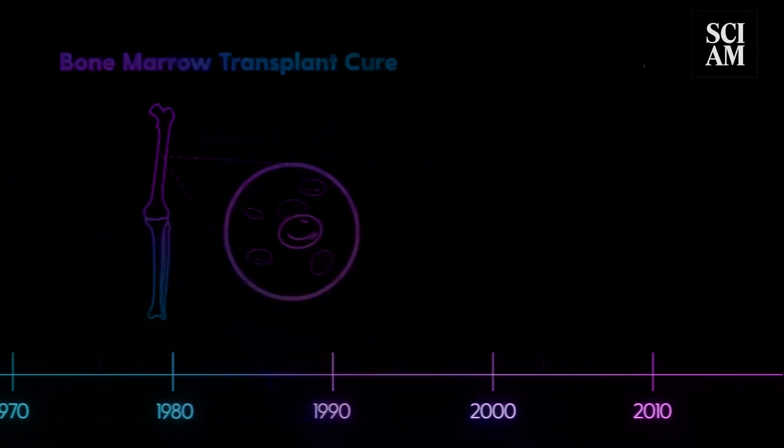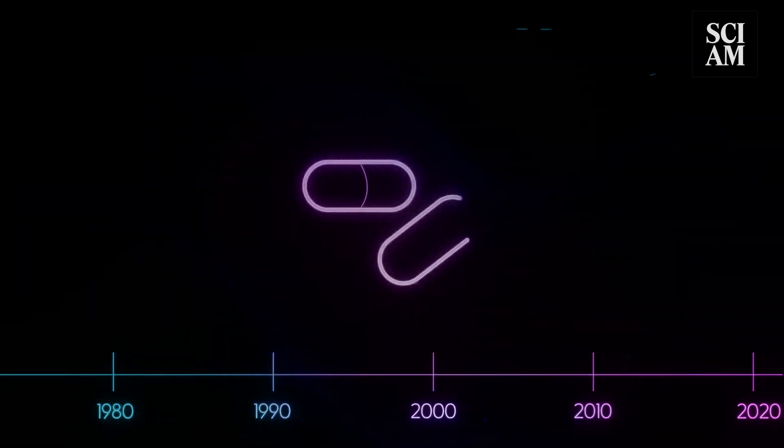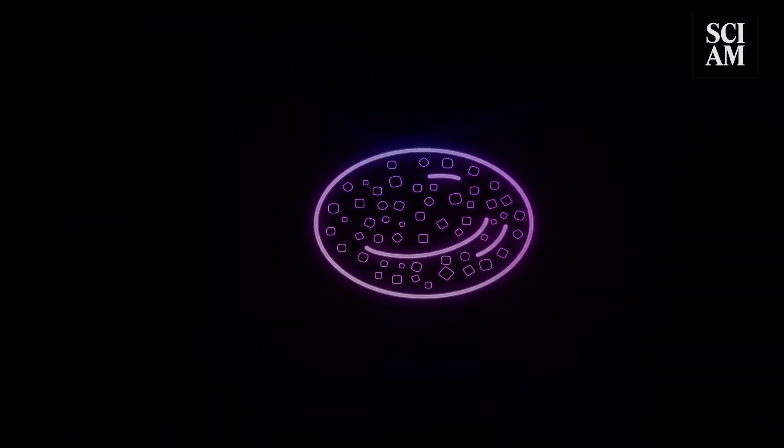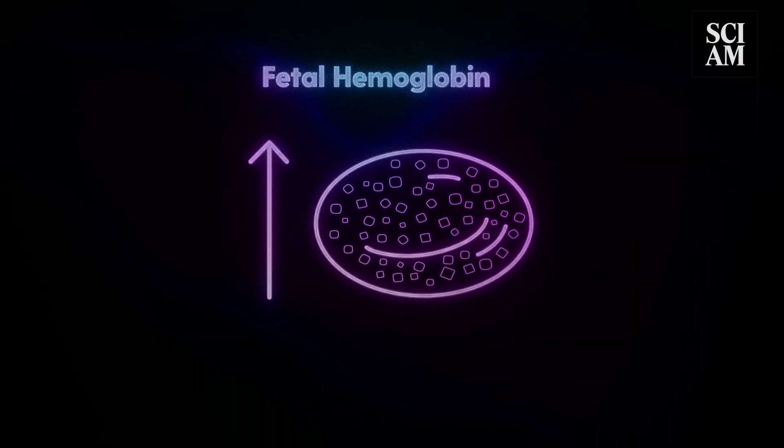In 1998, the Food and Drug Administration approved a drug called hydroxyurea to treat sickle cell in adults. It works by helping red blood cells stay flexible by increasing the amount of fetal hemoglobin in the blood.